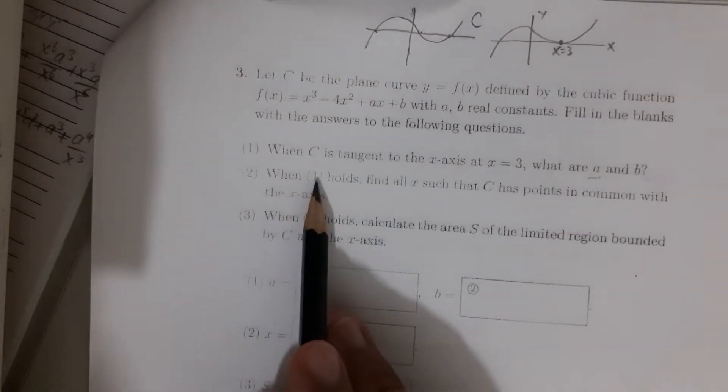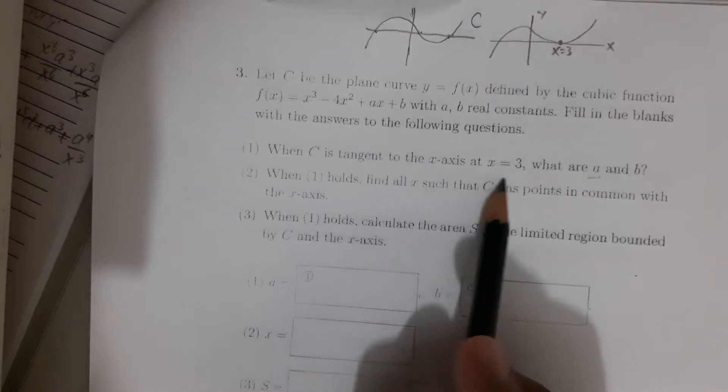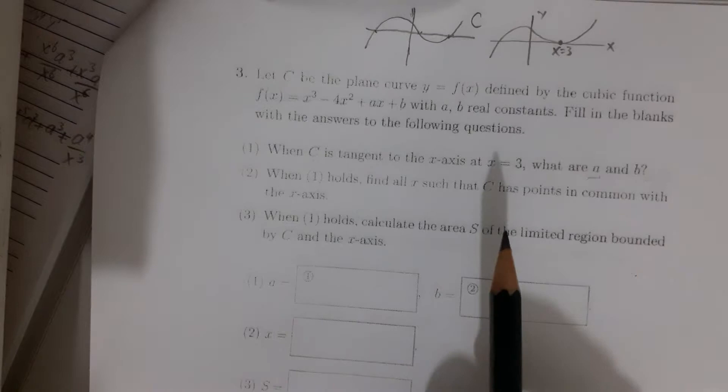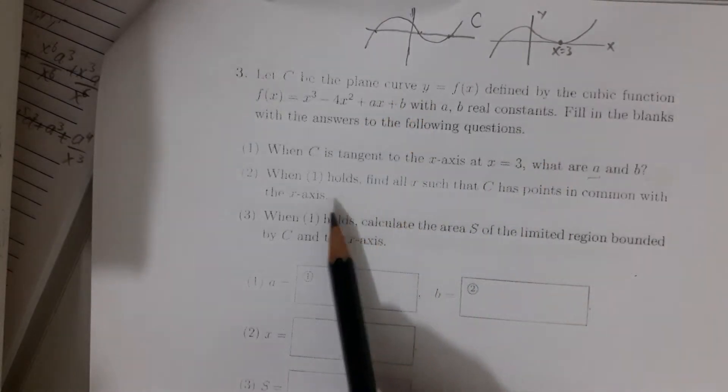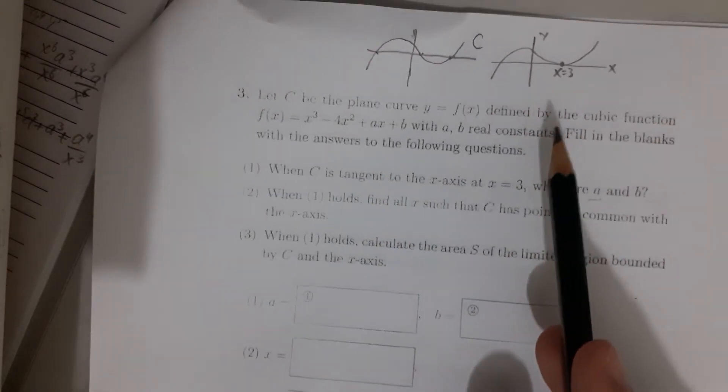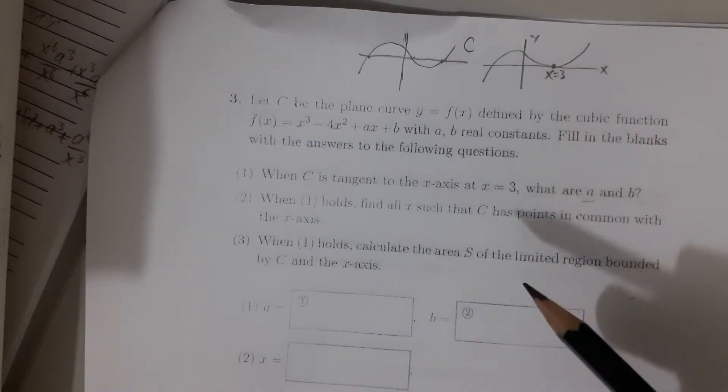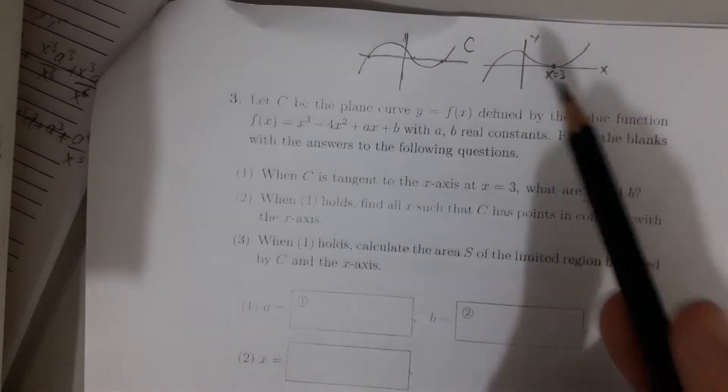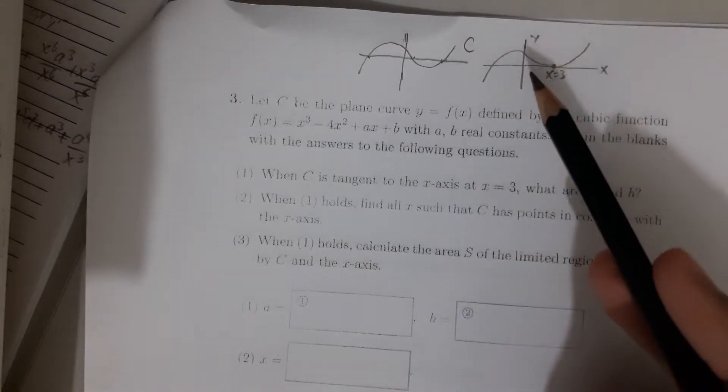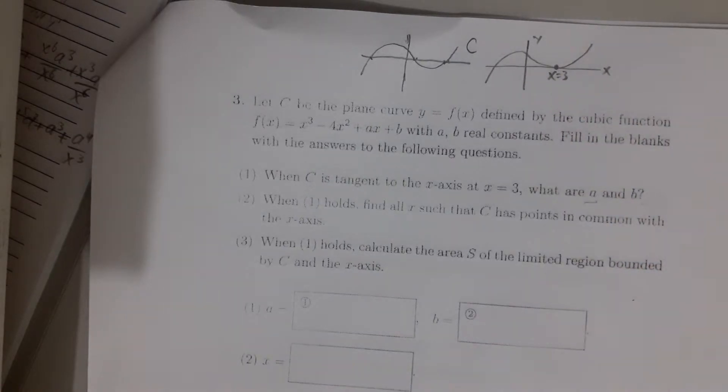So let's go to problem 2. When 1 holds, meaning that when this answer that we have, minus 3 and 18, is true for this function. When 1 holds, find all x such that C has points in common with the x-axis. So it is obvious that we have to find the other x. What it means is, at what point does the curve cross or even touch the x-axis again. In a way, they ask us to find the roots of the function itself.